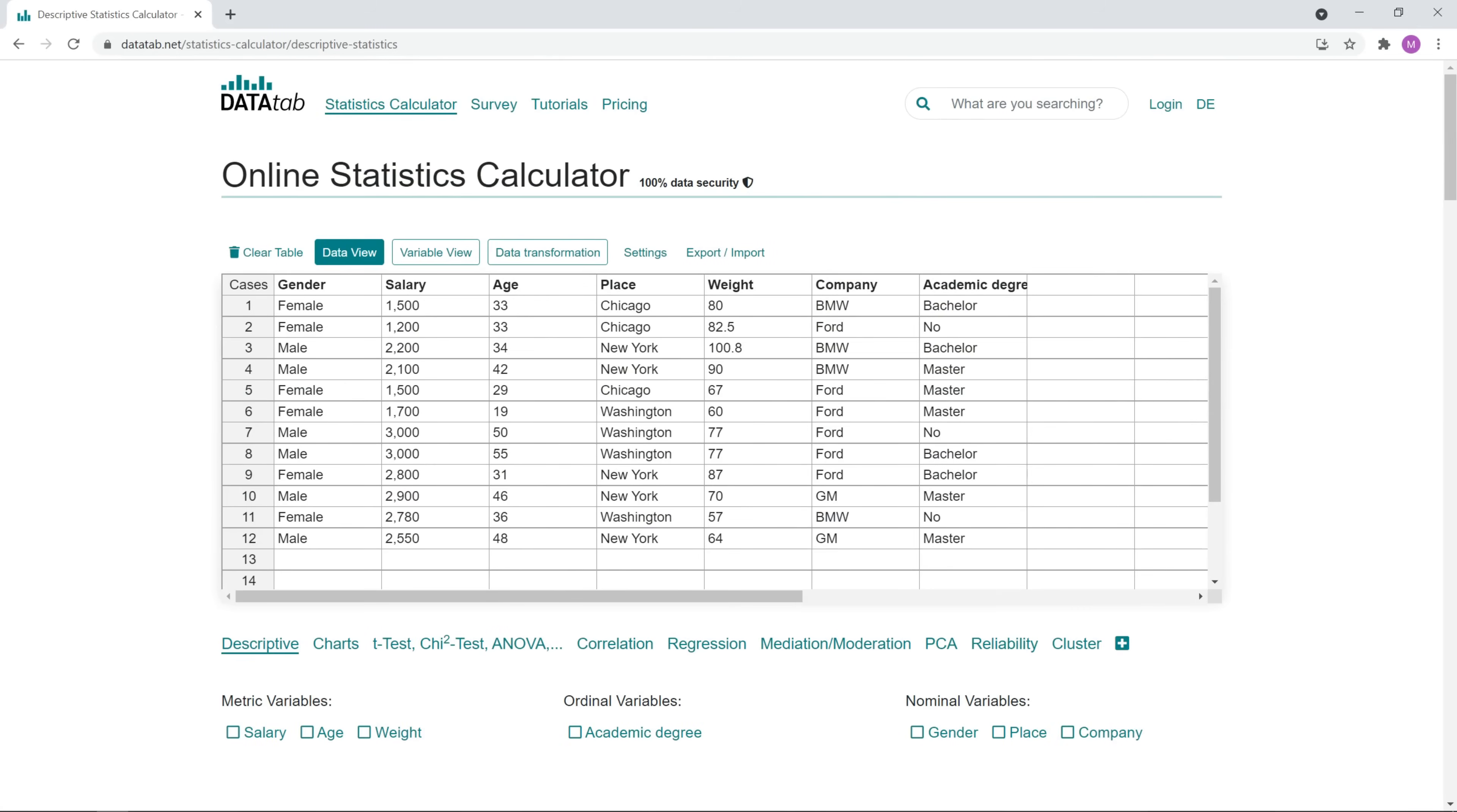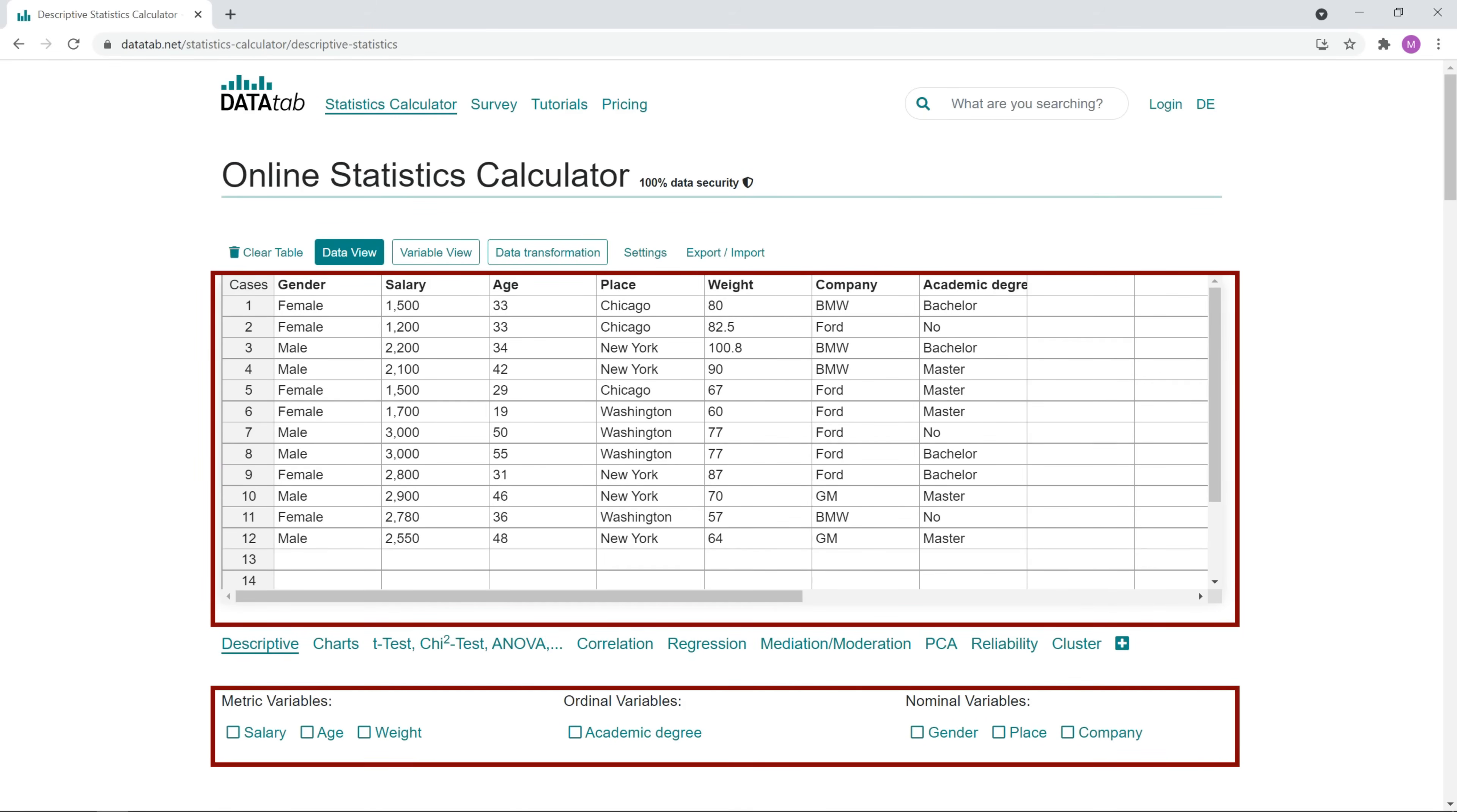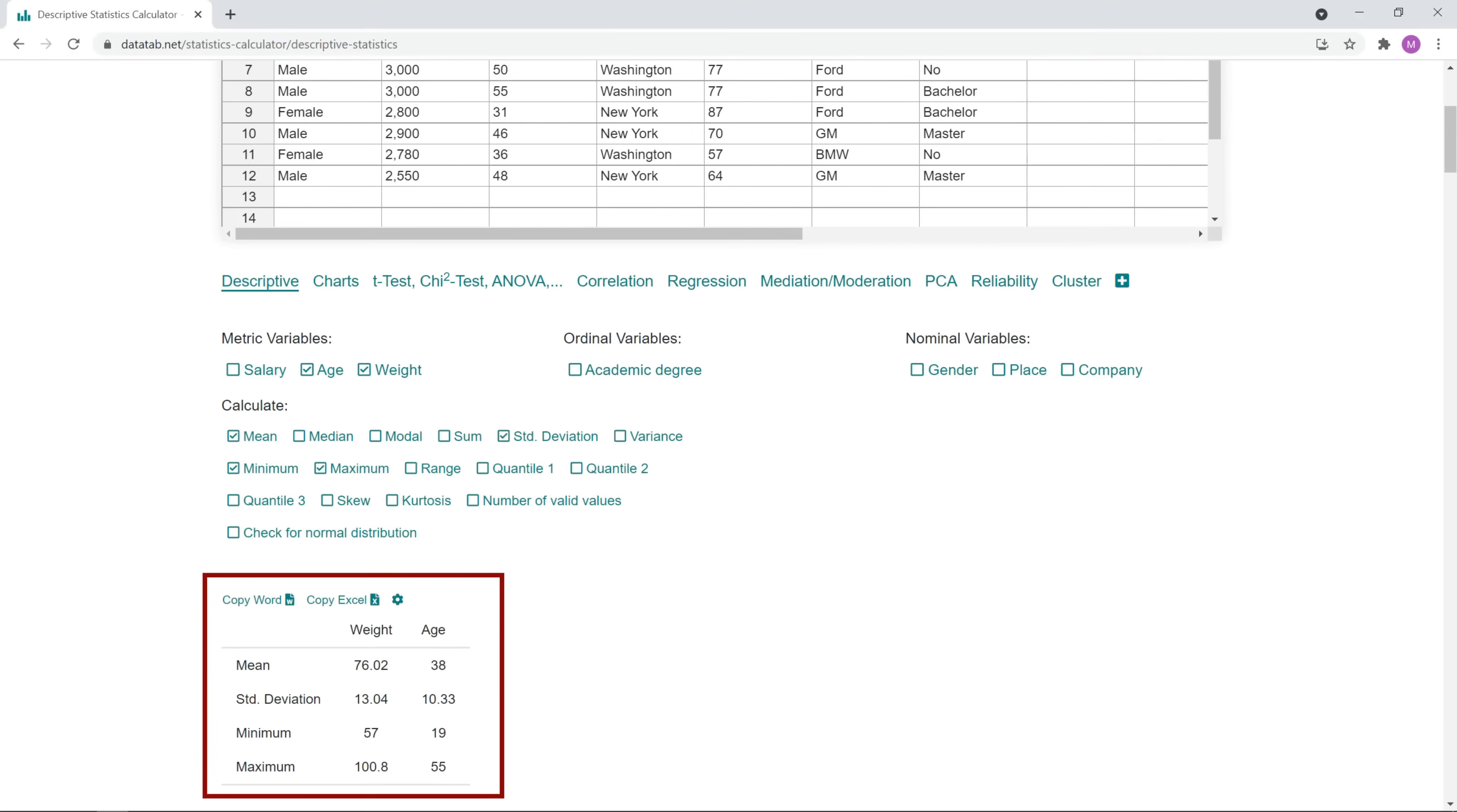And finally, as promised, I have a tip for you. If you want to calculate the standard deviation, you can easily do it online with Datatap. Just visit datatap.net, copy your data into the table, select the variable you want to calculate, and afterwards you will get the standard deviation in a very easy way. I hope you enjoyed the video and see you next time. Bye bye.